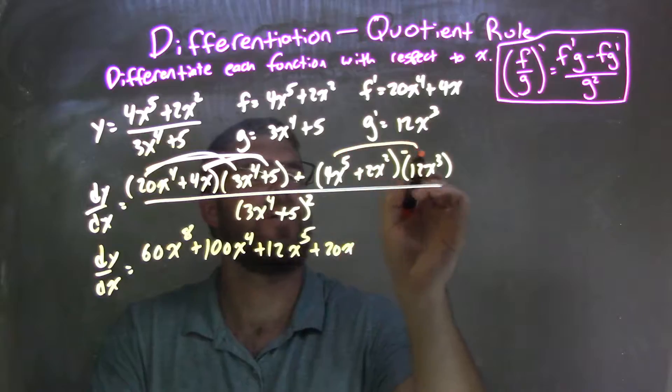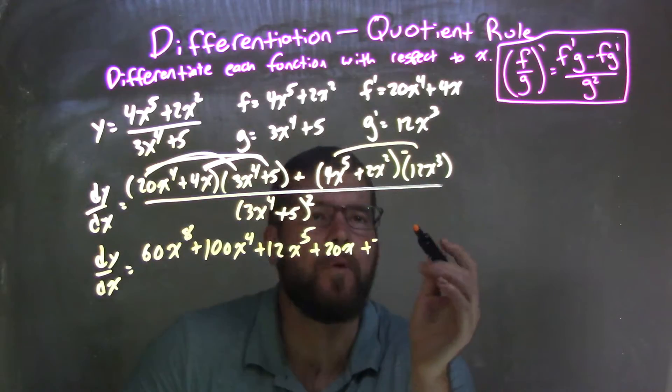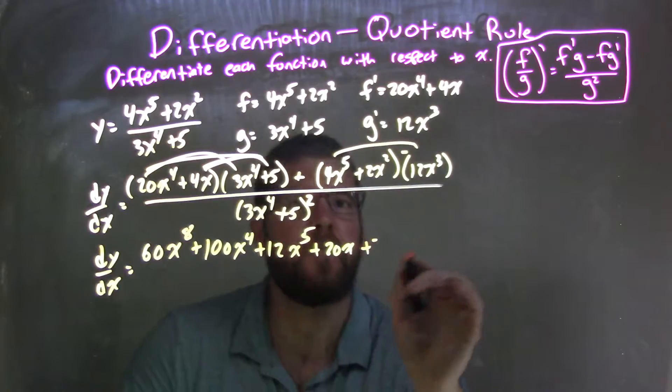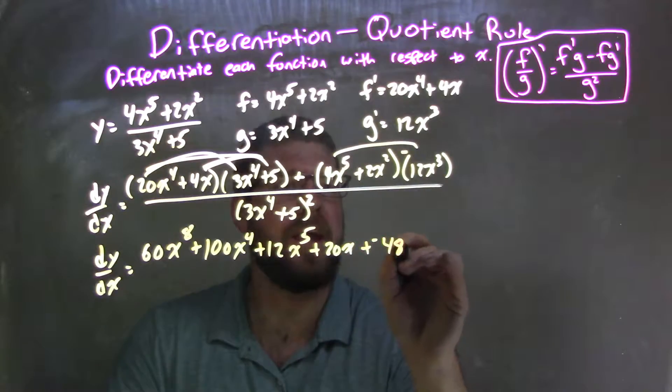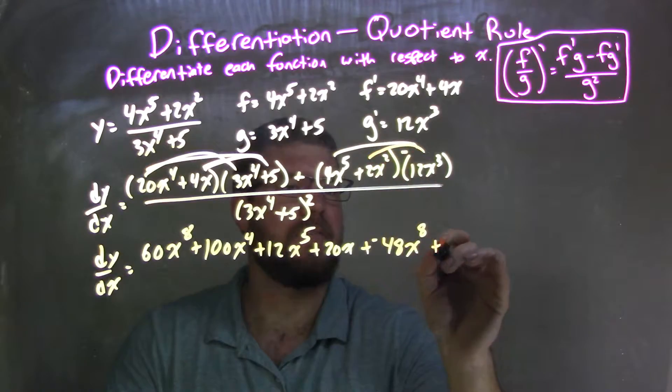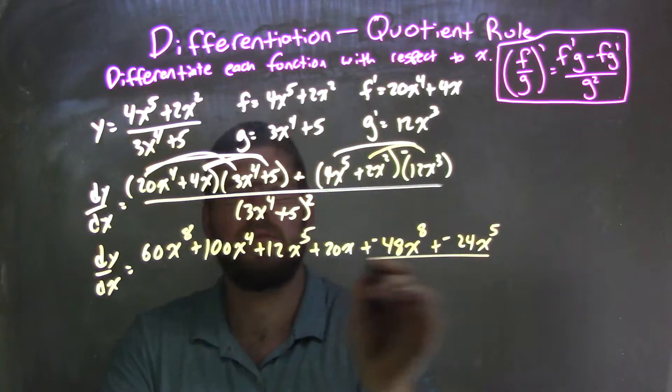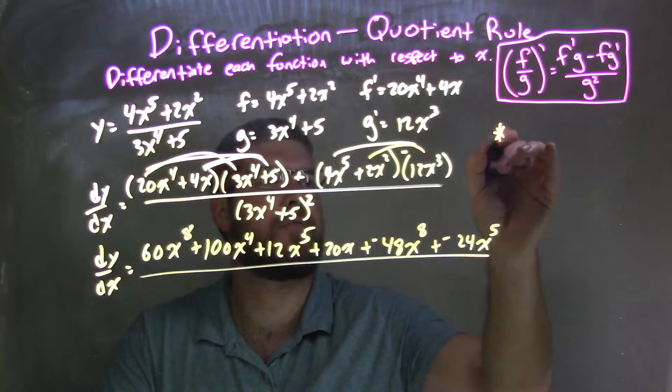So let's distribute now. 4 times a negative 12, that's a plus a negative here now. 4 times 12 is 48. So we're negative 48. Add the exponent, x to the eighth power. And then 2 times negative 12 is a negative 24, and that's x to the fifth power when we add the exponents.